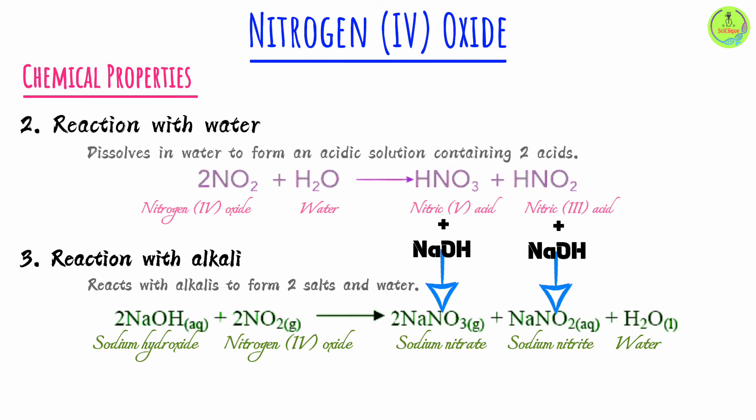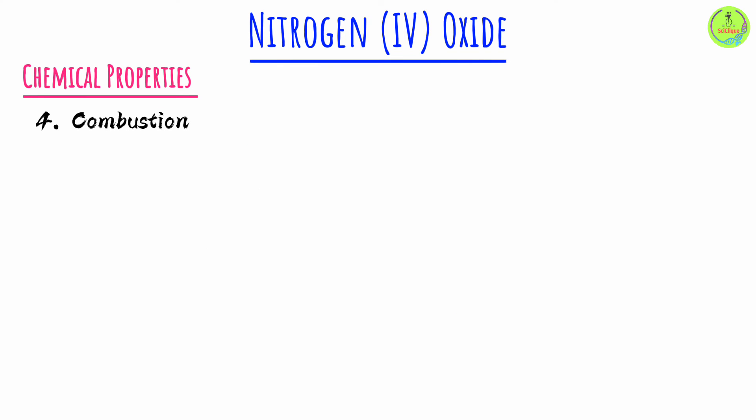To clarify further: when you bubble nitrogen dioxide into a sodium hydroxide solution, the NO₂ first dissolves in the water molecules present in the solution, forming the two acids — nitric acid and nitrous acid. These two acids then react with sodium hydroxide to form the two salts: sodium nitrate and sodium nitrite.